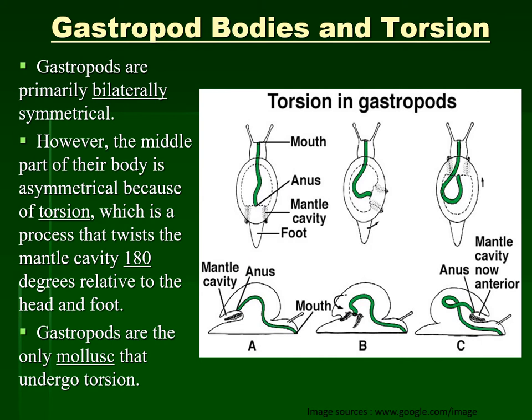An important change from earlier forms to later forms — like a caterpillar changing to a butterfly — is called metamorphosis. Similarly, in gastropods also, we observe a very interesting phenomenon that happens in its juvenile stage, or more specifically in the veliger stage, that we call torsion. This incident is found to occur in all gastropods, which are primarily bilaterally symmetrical.